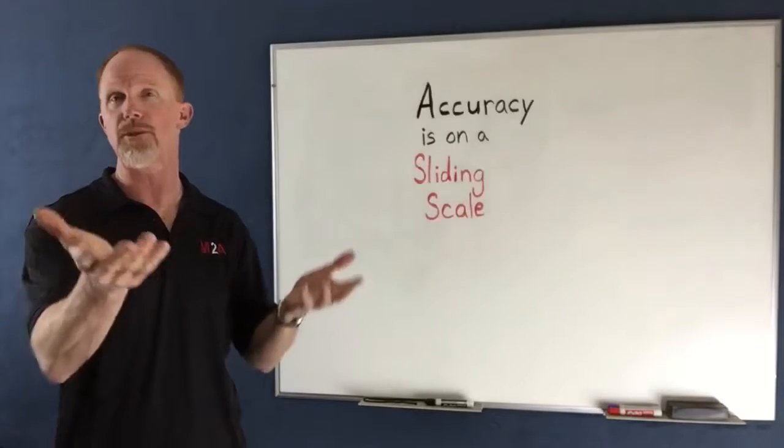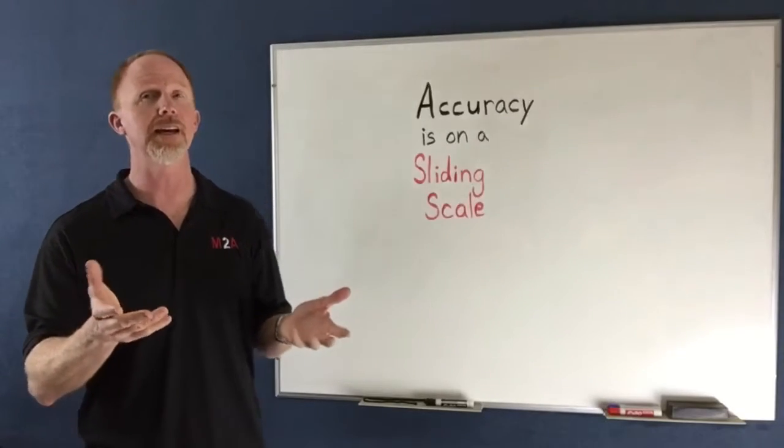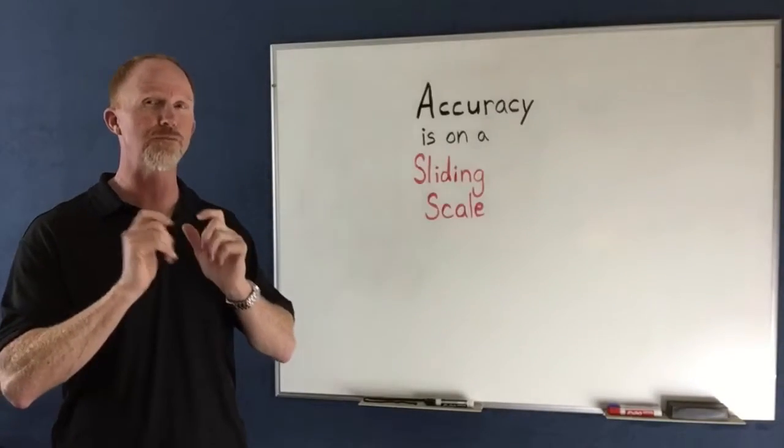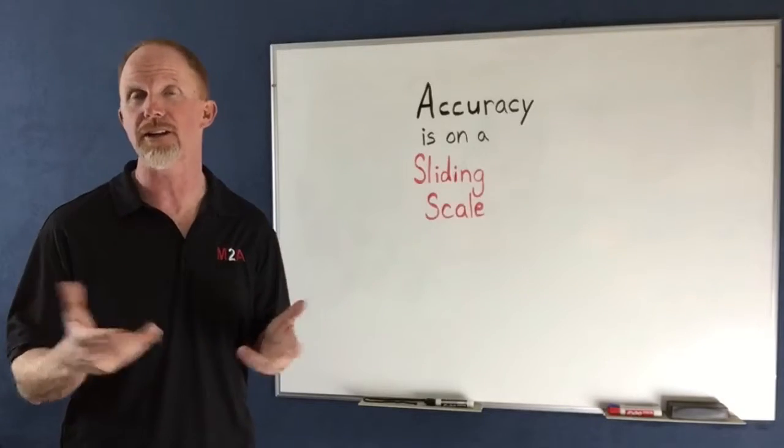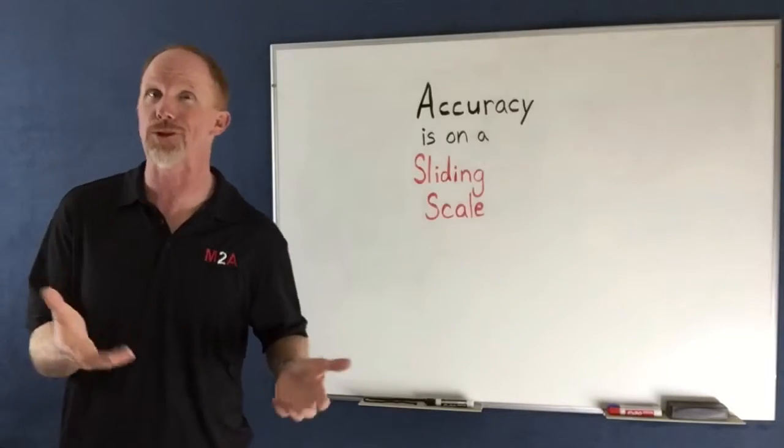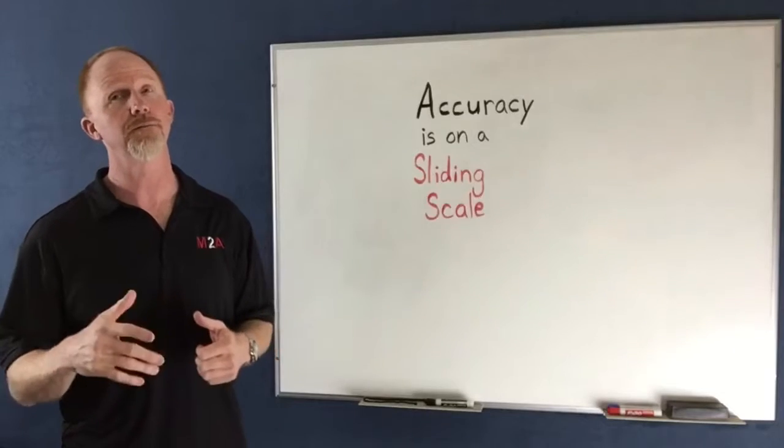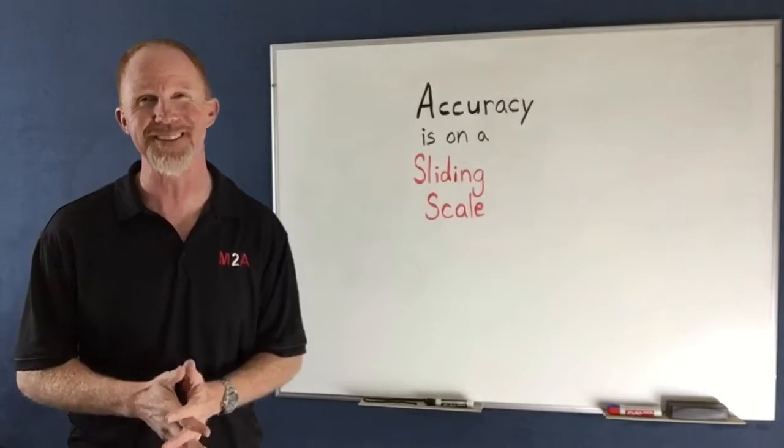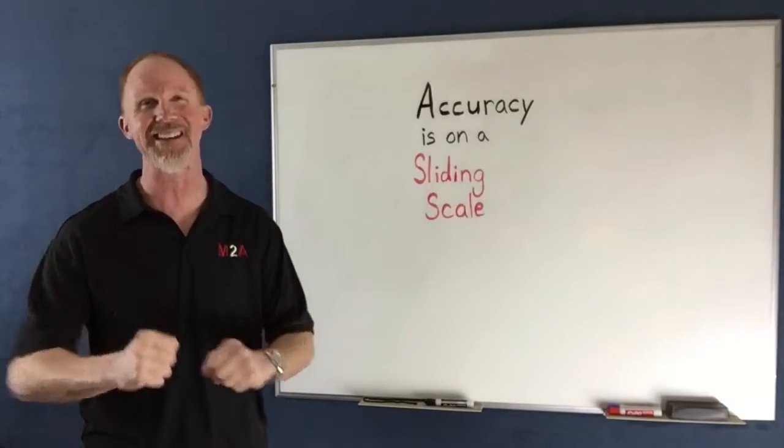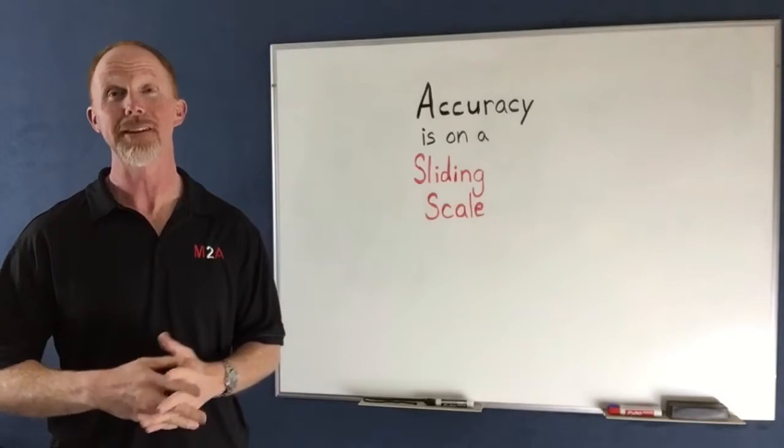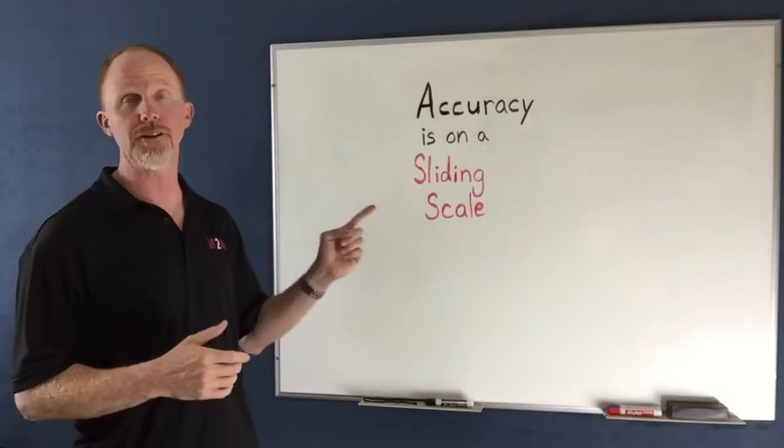So if you get something served up to you on a silver platter, that's when you should probably be pretty accurate in order to have categorized what you did as accurate or hitting your target. Now, how often do you setters actually get a great pass that's no problem to deal with? Well, not very often. And so accuracy can change.